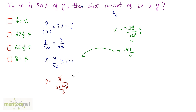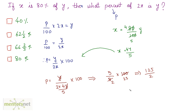The Y terms cancel out, and with the 100 factor we get 5 upon 8 times 100. Simplifying: 500 upon 8 equals 125 upon 2, which equals 62.5. So the answer is 62.5, which is 62 and a half, and option B is the right answer.